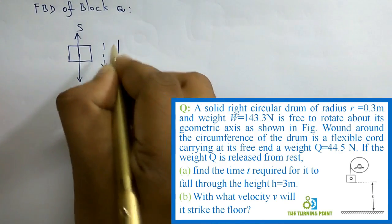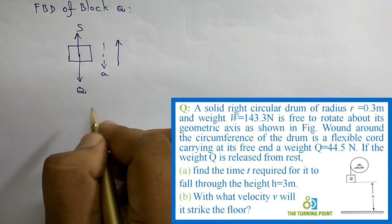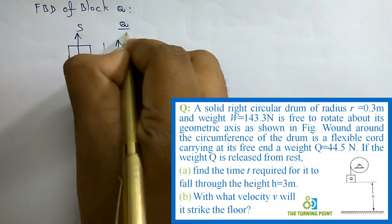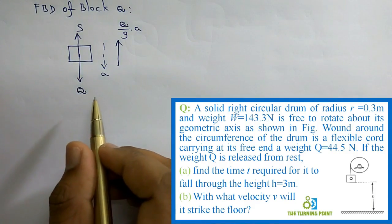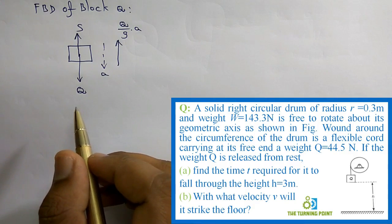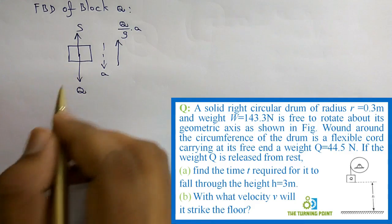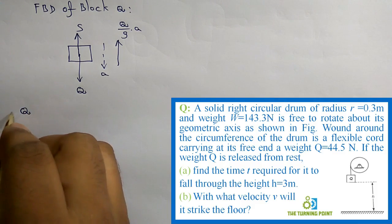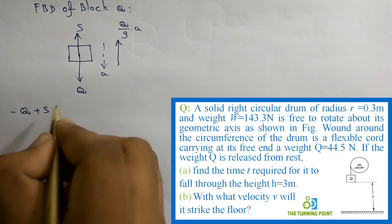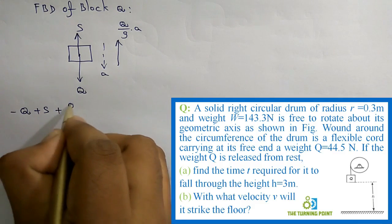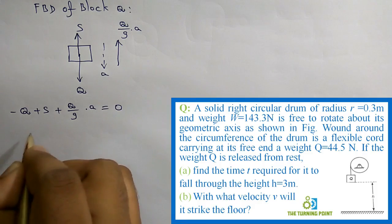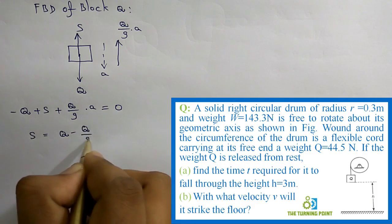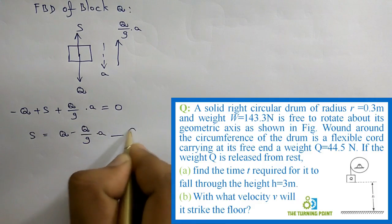In the opposite direction, you will be having inertia force which is MA or W/G into A. Here weight of the block is Q, so Q/G into A is the inertia force here. When you consider the ΣFy=0 equation, Q minus S plus Q/G into A equals zero. From this, S equals Q minus Q/G into A. Consider this as equation 1.